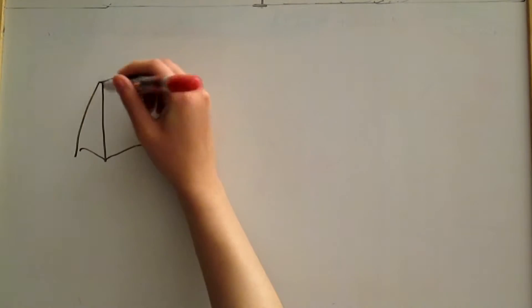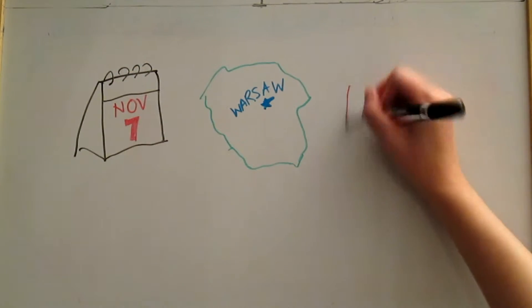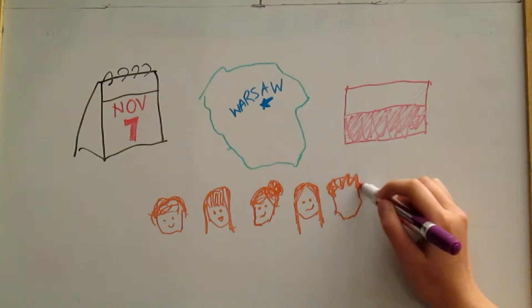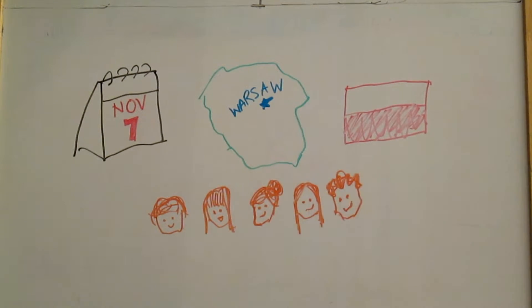I was born on November 7th in the year 1867 in Warsaw, Poland. I was the youngest of three older sisters, Sofia, Bronisława, and Helena, and an older brother, Josef.